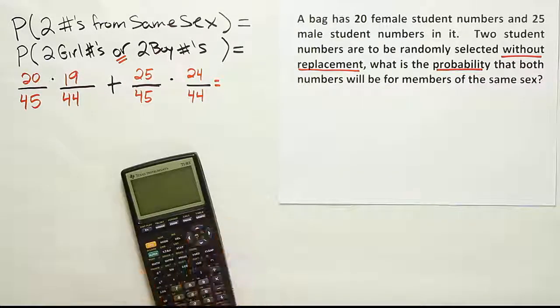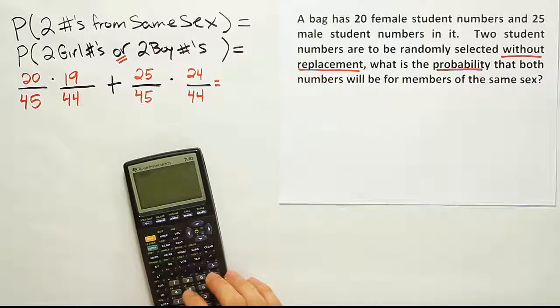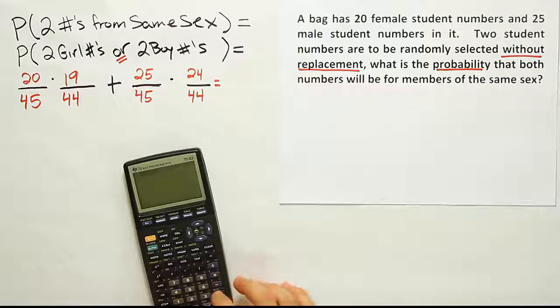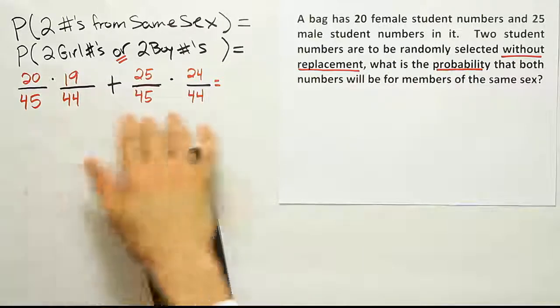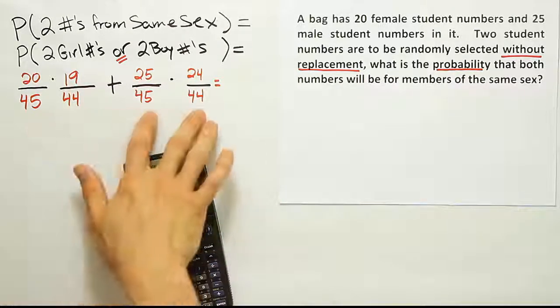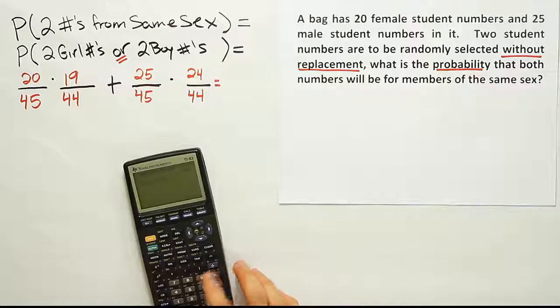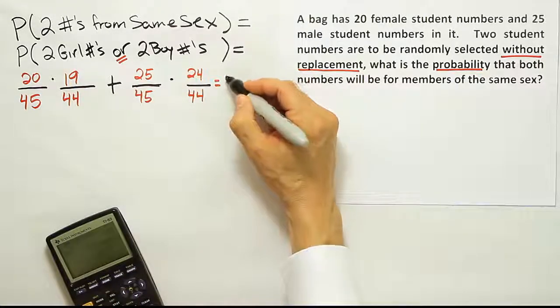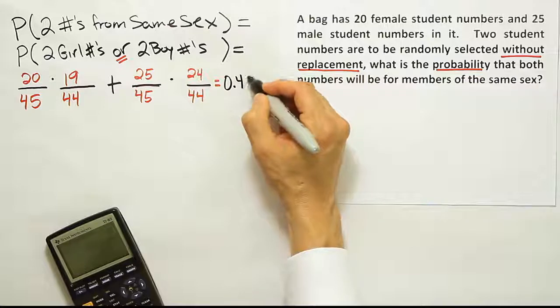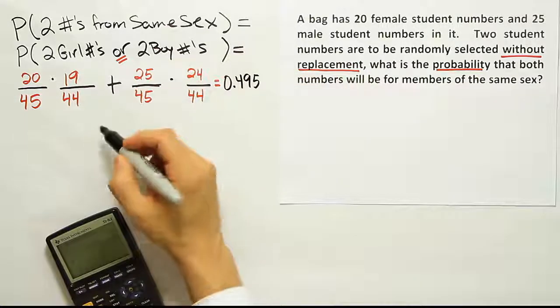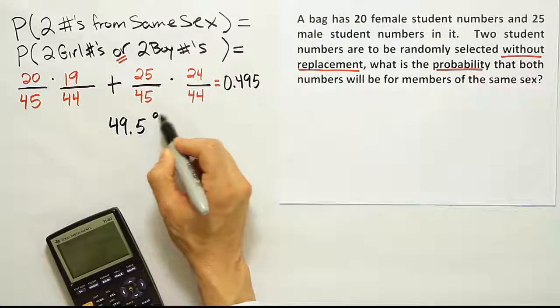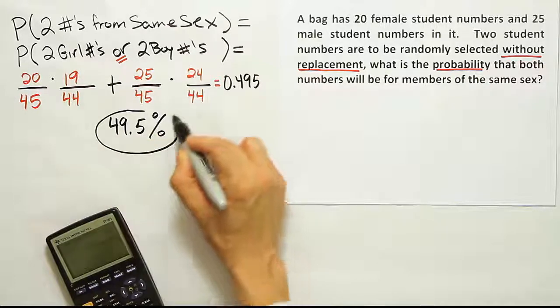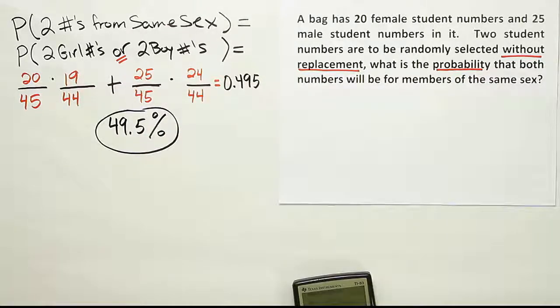Okay, so let's just plug the rest of those in. We'll have 20 times 19 plus 25 times 24. That's the top of the fraction, right? And that will be divided by the common denominator for these two fractions of 45 times 44. And when we do that, we end up with the answer 49.5%. So 0.495, or in other words, 49.5%. And that's it. So pretty close to half the time that will occur.